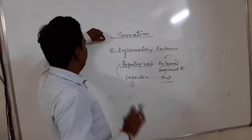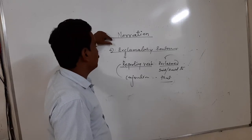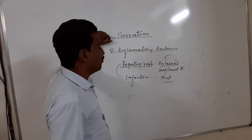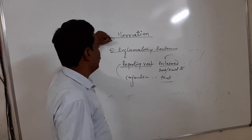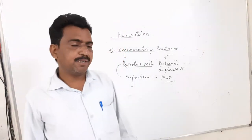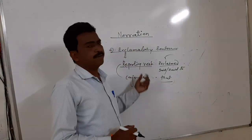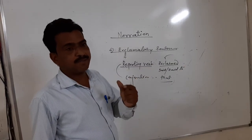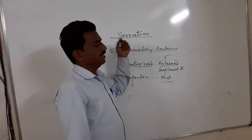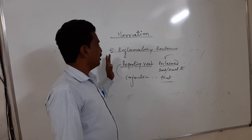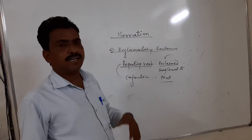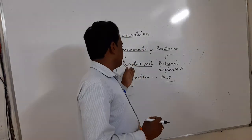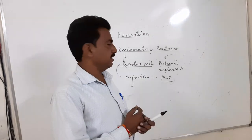Now, when we change direct into indirect speech, we have to use the reporting verb and conjunction. How to use them: first of all we have to see what is in the reporting speech, because in the reporting speech there is a kind of sentence. According to the kind of the sentence, we change the reporting verb and conjunction. This is the most important part — that is why the reporting speech is the most important part in narration. Today we have seen the use of the reporting verb as well as the conjunction.